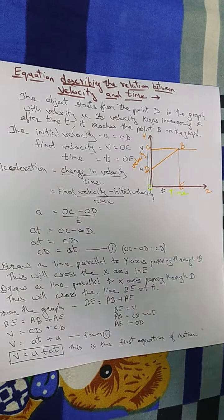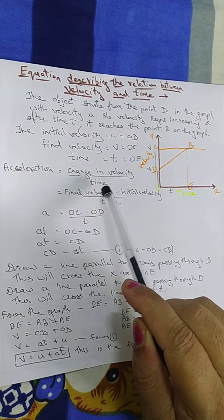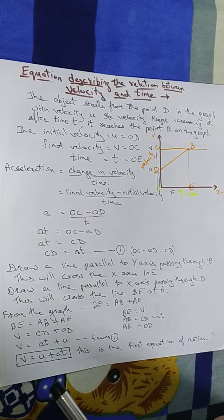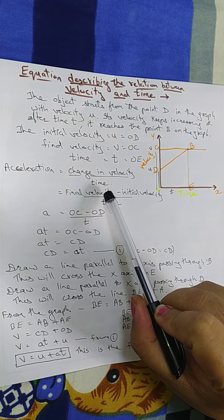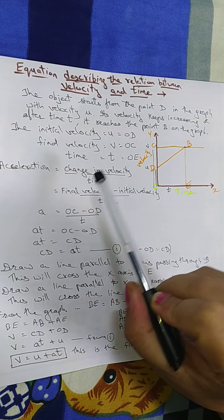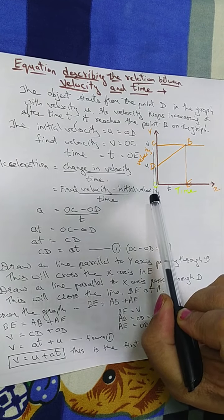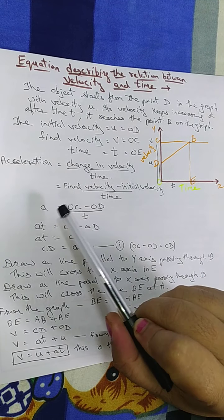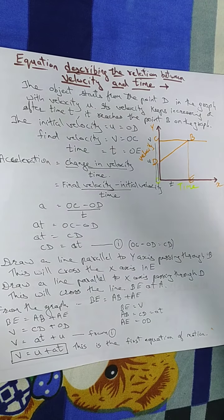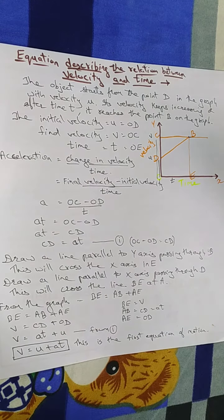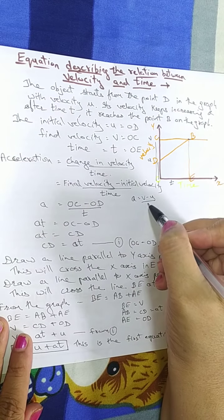Now, we have studied acceleration. Acceleration is the rate of change in velocity, that is, change in velocity divided by time. The change in velocity means final velocity minus initial velocity. So the formula for acceleration is: A equals V minus U divided by T.